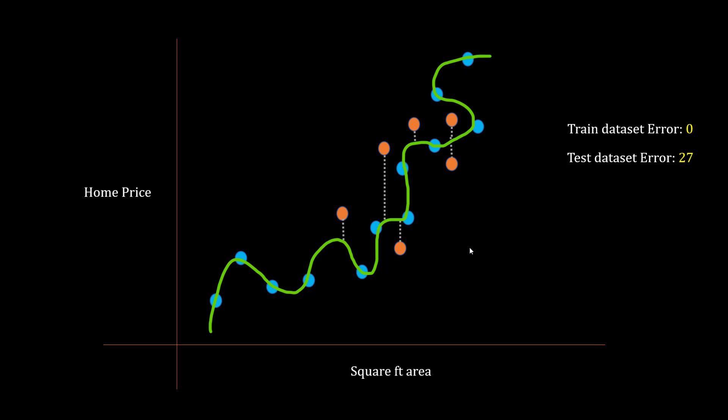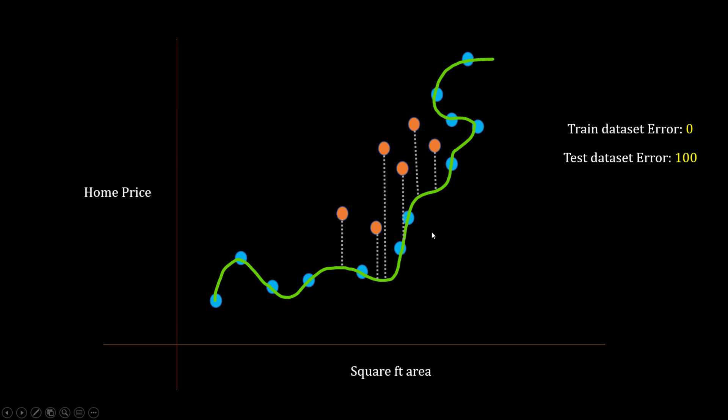But the problem that happened here is your test data set error is let's say 27. You can compare these two images and easily see that the test data set error here is much higher than the second scenario. You just sum up all these gray dotted lines here.